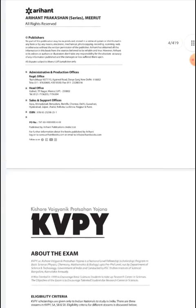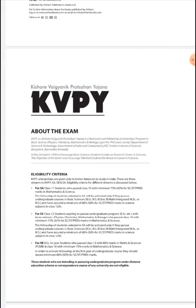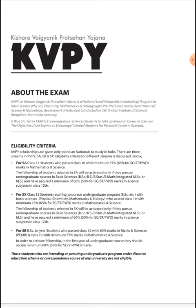These are introductory pages about the exam. For stream SX, class 12 students aspire to pursue undergraduate programs such as BSc with basic science - physics, chemistry, maths and biology - who pass class 10 with minimal 75 percentage marks in mathematics and science. The fellowship of students selected in SX will be activated only if they pursue undergraduate course in basic science and have secured a minimum of 60 percentage marks in science subject in class 12.